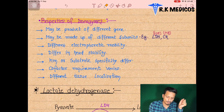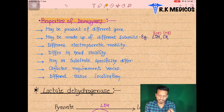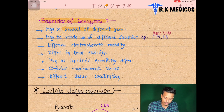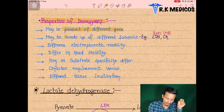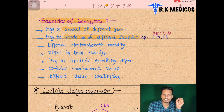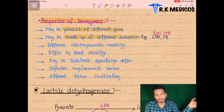The properties of isoenzymes include: they may be products of different genes, or they may be made up of different subunits. They have the same enzyme name but the subunits differ in different locations of the body.